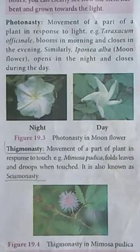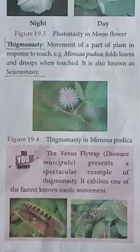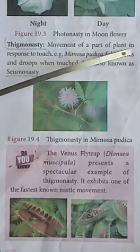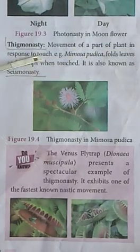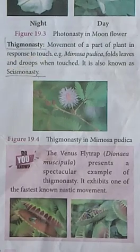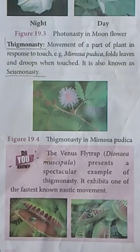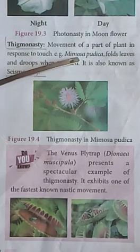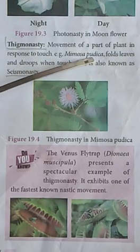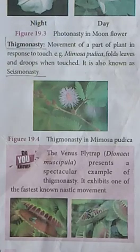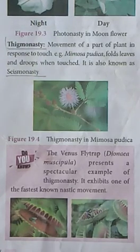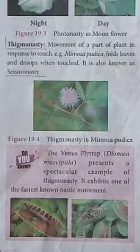Next, we will talk about thigmonasty — the movement of a part of the plant in response to touch. An example is Mimosa pudica. This plant will fold its leaves when touched, and after a few minutes the leaves will re-open.